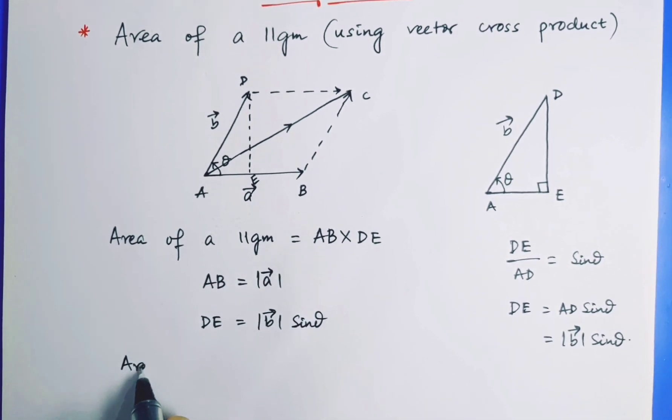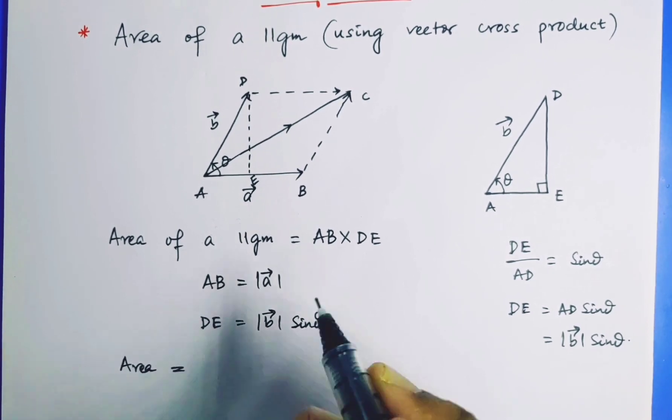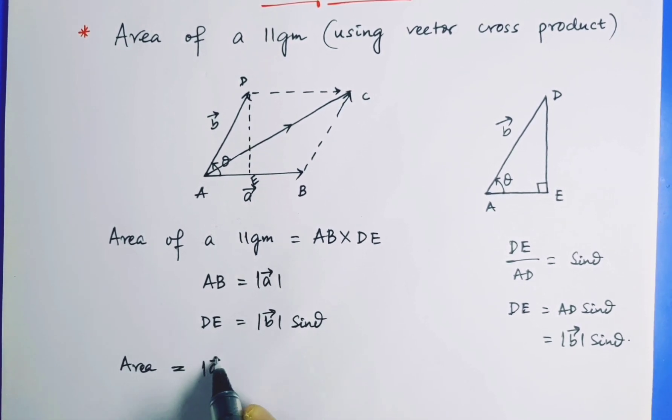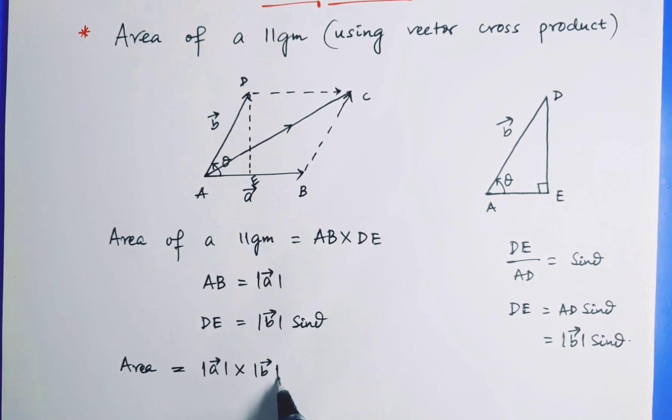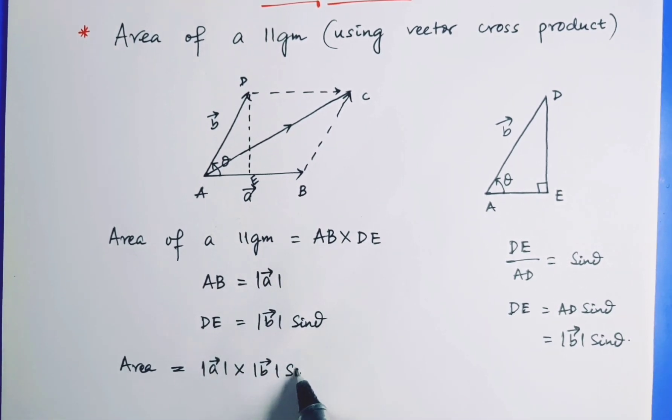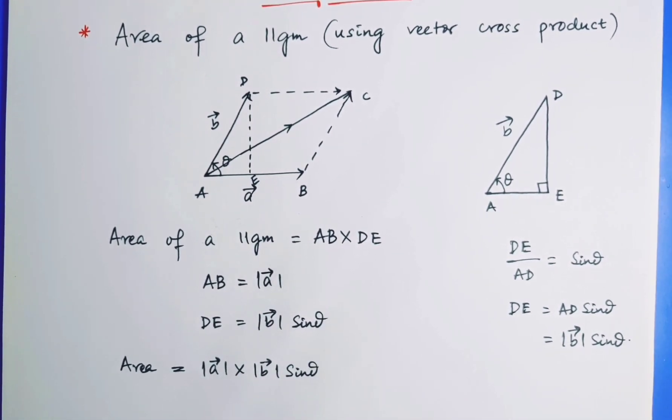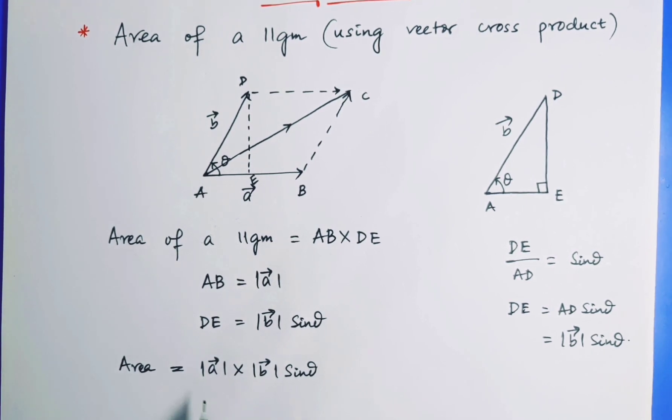So now what is the area? Area is equal to |A| multiplied by - look, one thing, this multiplication is not cross product, it's just normal multiplication - |B| sine theta.